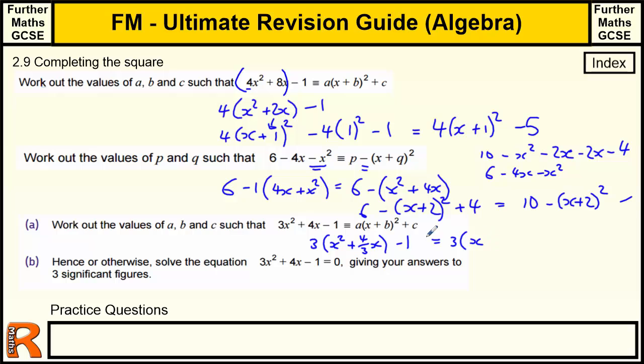Okay, so we complete the square on this. So we take half of this number and put it here. Well, half of 4 thirds is 2 thirds. And then we've got to subtract this number squared times by this number. So take away 3 lots of 2 thirds squared. And take away 1 on the end. So we've got 3 brackets x plus 2 thirds all squared. Okay, so this squared is going to be 4 ninths. Times by 3 is going to be 12 ninths. And we take away another 1.